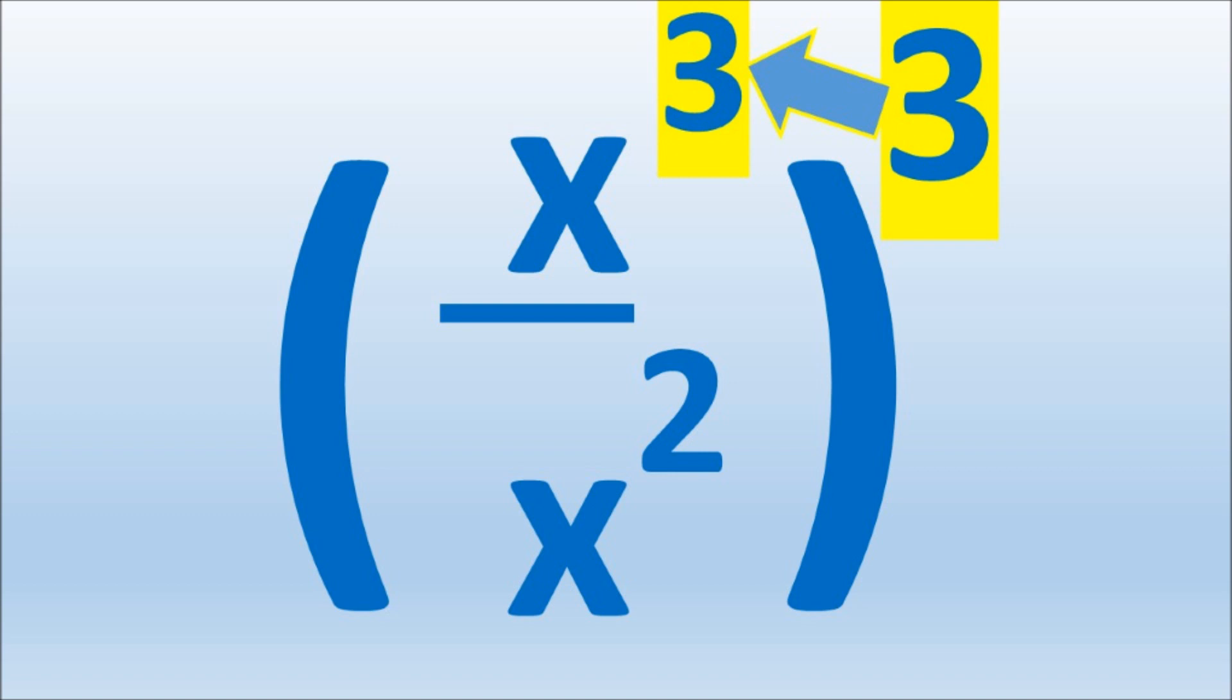To solve, we multiply the outside exponent by the exponents inside the parentheses. So 3 times 3 is 9. 3 times 2 is 6. So the result is x to the ninth over x to the sixth.